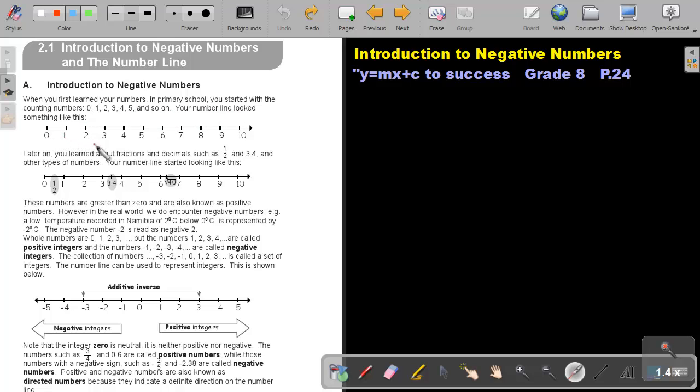0, 1, 2, 3, 4, 5, and so forth. Later on, you learned about fractions and decimals, such as one half. A half will be between 0 and 1, exactly in the middle.